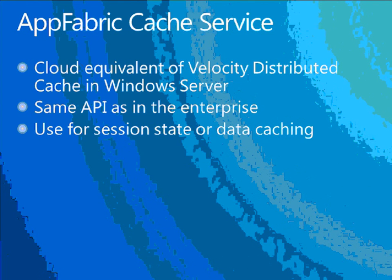AppFabric cache service: if you're familiar with AppFabric, there have been two variations — Windows Server AppFabric for the enterprise and Windows Azure AppFabric for the cloud, with different feature sets. Windows Server AppFabric had the velocity distributed memory cache. Now the first evidence of convergence between these two is the new AppFabric cache service in the cloud — the same feature as the velocity distributed cache, same API, used the same way. Use cases include session state or any kind of data your application wants to cache in memory.